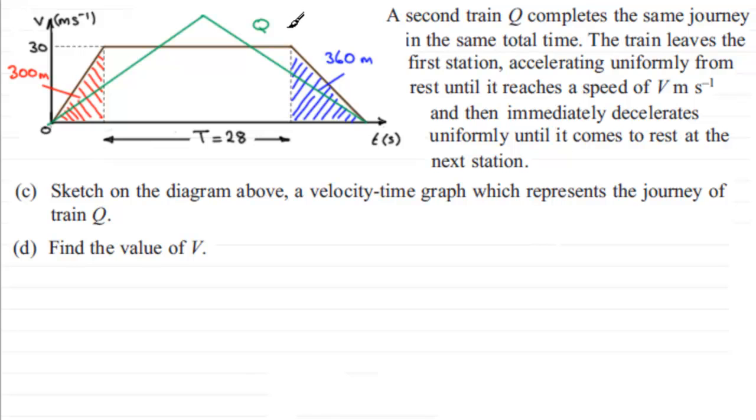Okay, so how do we go about now finding the value of V? Well, the point is the areas are exactly the same. The area under the graph for Q is exactly the same as the area underneath the graph for P. So let's try and find out then, in order to get that area, I've got to find out the length of this base of the triangle, which requires finding this time and this time.